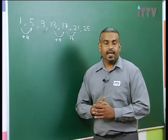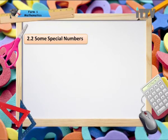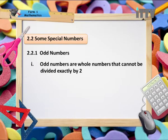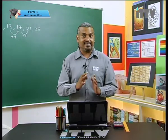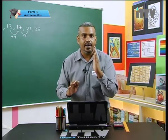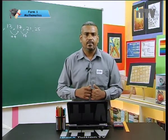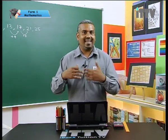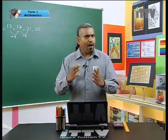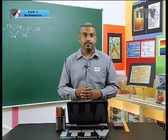Let's move on and see some special numbers. The first one we are going to observe is odd numbers. Odd numbers are whole numbers that cannot be divided exactly by 2 — meaning if you take an odd number and divide it by 2, there will be a remainder. For example, 4 divided by 2 is 2 with no remainder, so 4 is not odd. But 3 divided by 2 has a remainder, so 3 is an odd number.